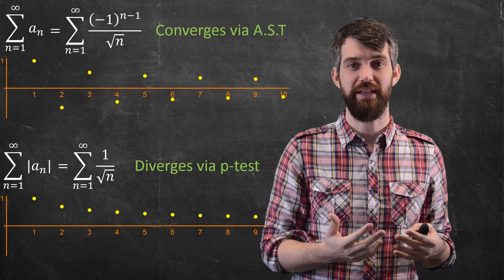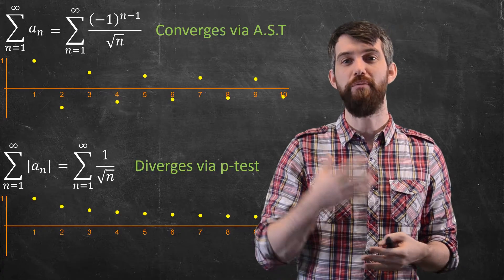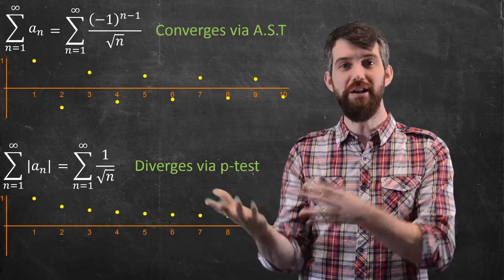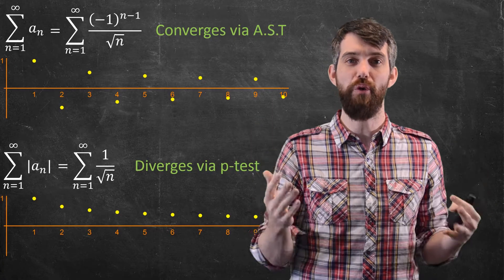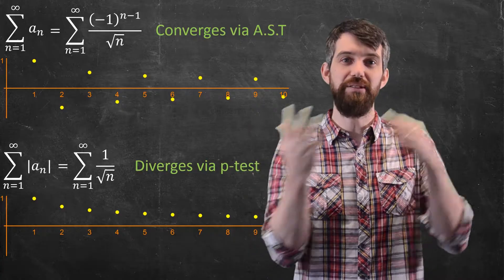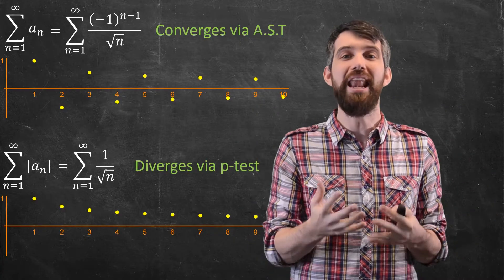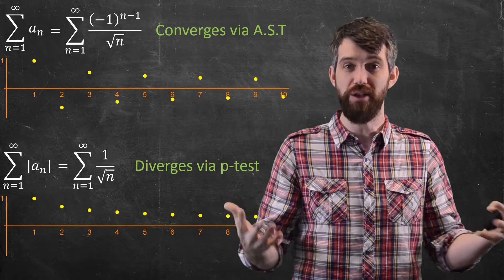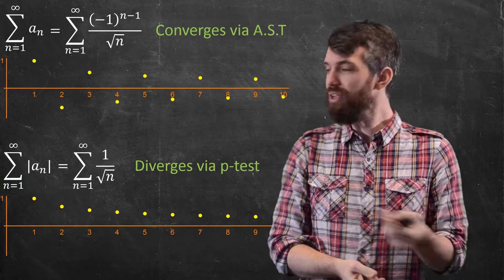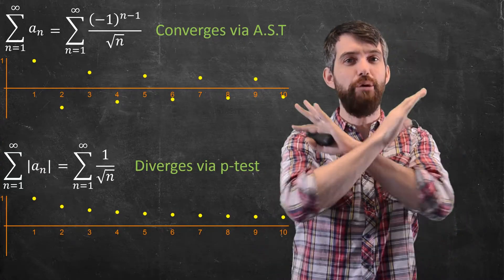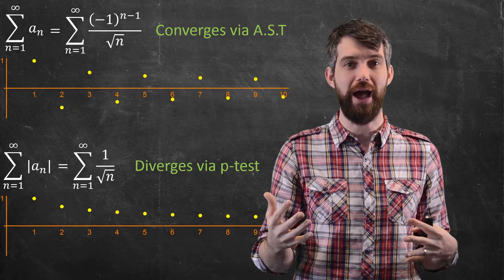Now, why might that be the case? If you think about the one with positives and negatives, when you take a positive term and you add it to a negative term, it cancels. Maybe not entirely or all the way, but the combination of positives and negatives, they don't add up as much as only adding positives, or alternatively, only adding negatives together. So when you take the absolute value, you get rid of any form of internal cancellation that you have.